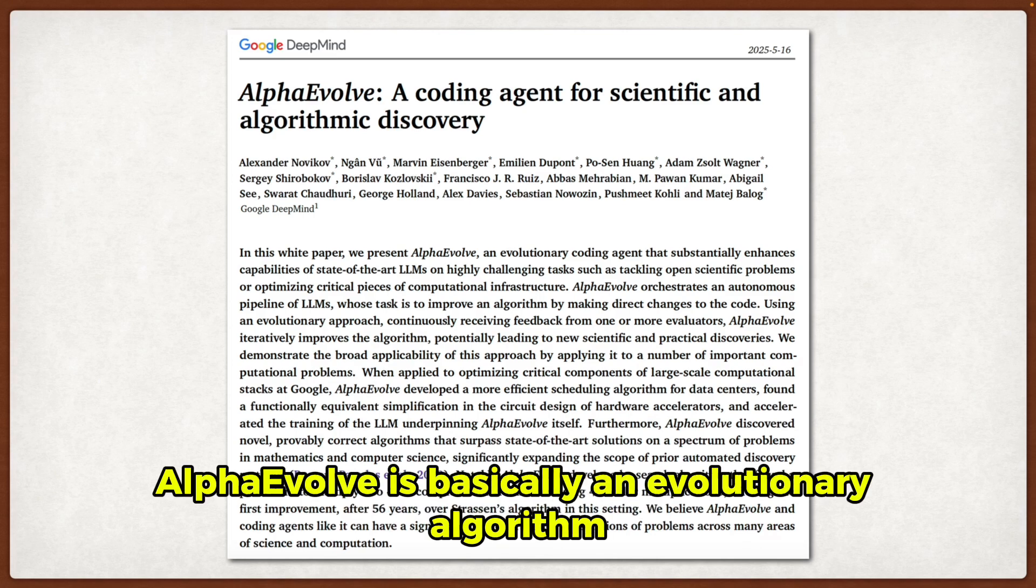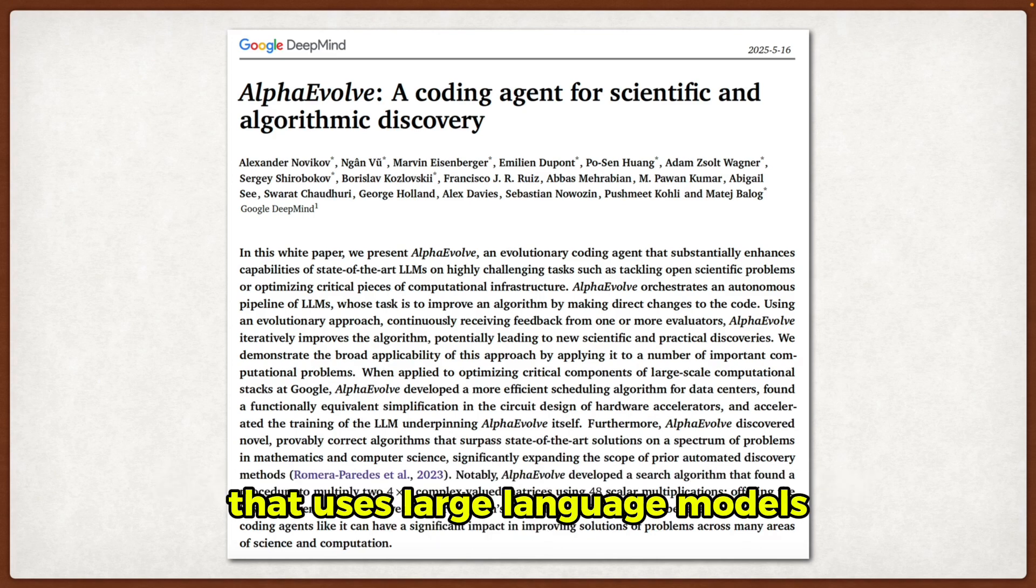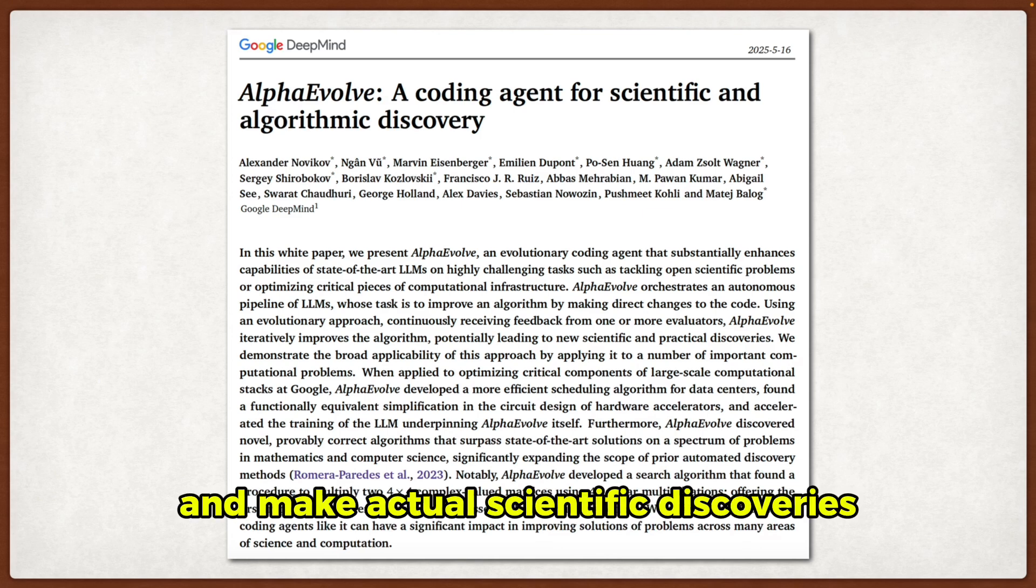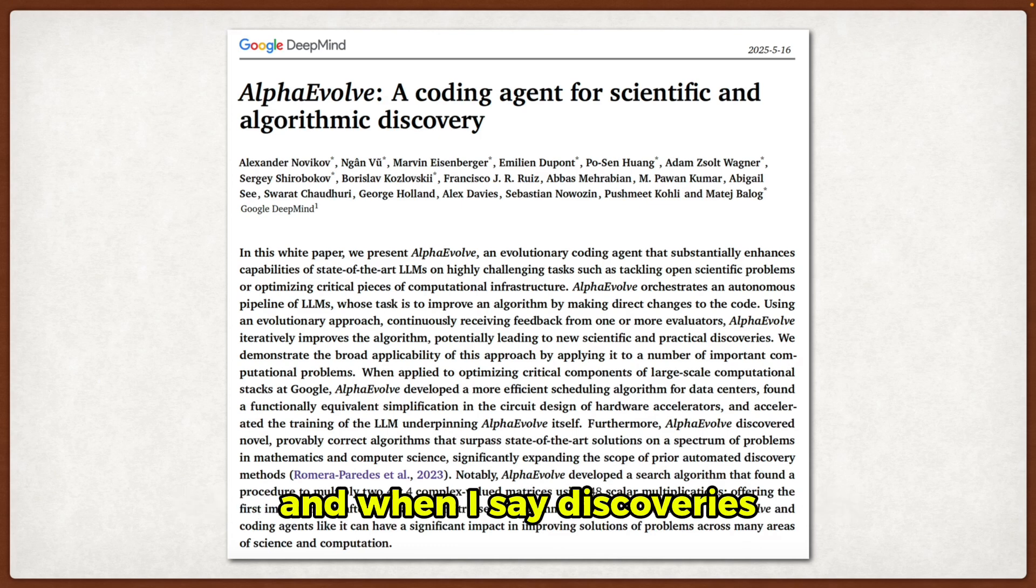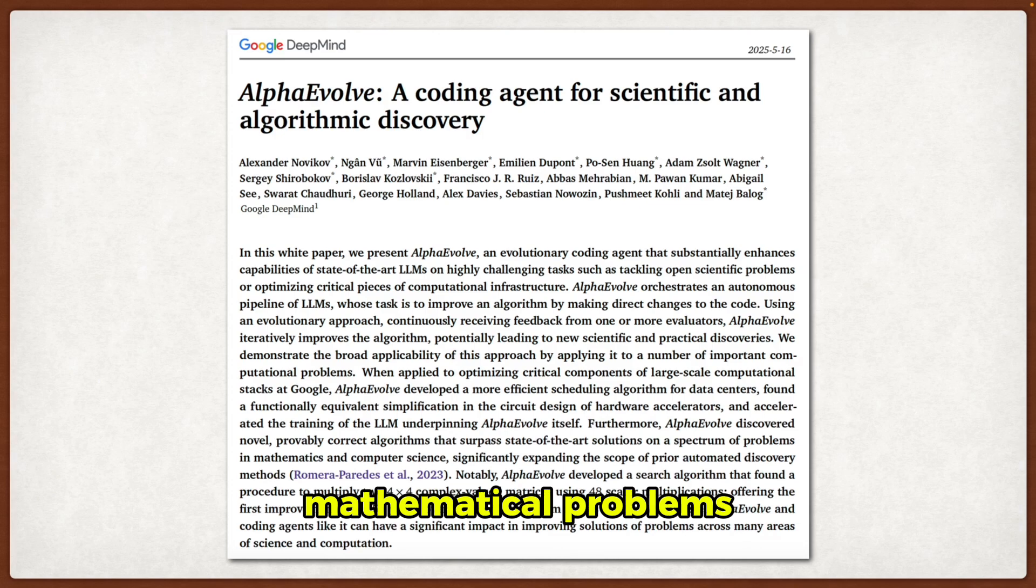So, to put it simply, AlphaEvolve is basically an evolutionary algorithm that uses large language models to discover new algorithms and make actual scientific discoveries. And when I say discoveries, I mean like actual improvements to decades-old mathematical problems.